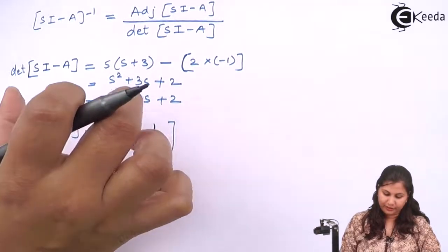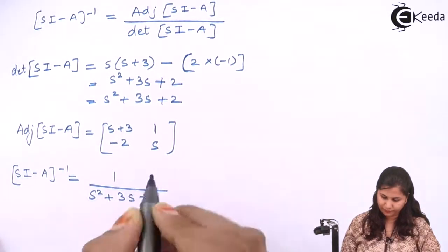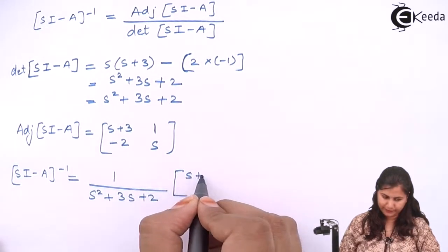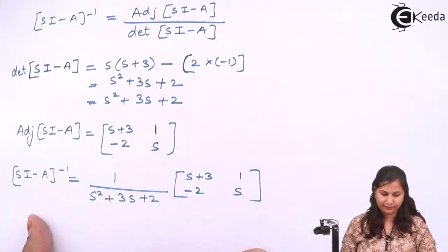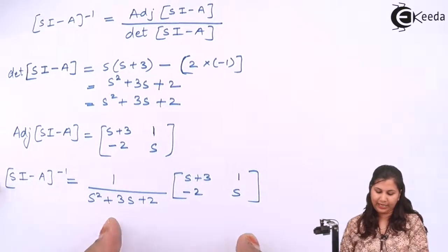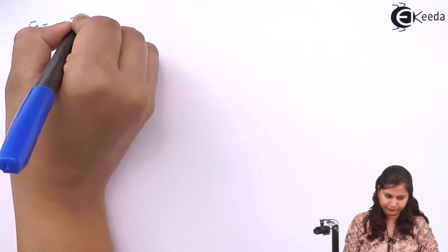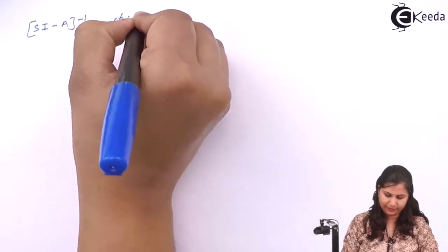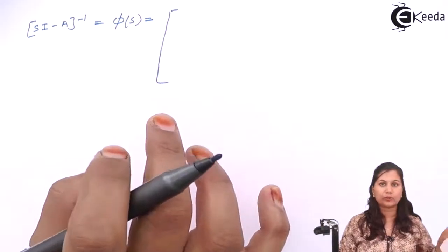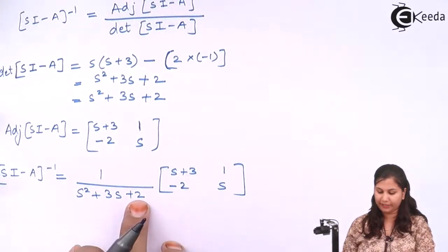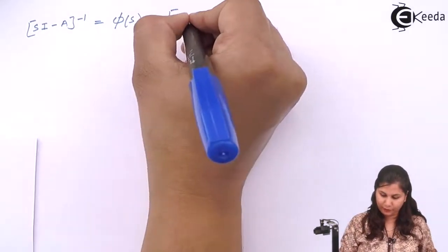So (sI - A) inverse equals the adjoint divided by the determinant: 1 over (s² + 3s + 2) times the matrix [s+3, 1; -2, s]. This is our φ(s), the state transition matrix in the s-domain. Each term is divided by s² + 3s + 2.